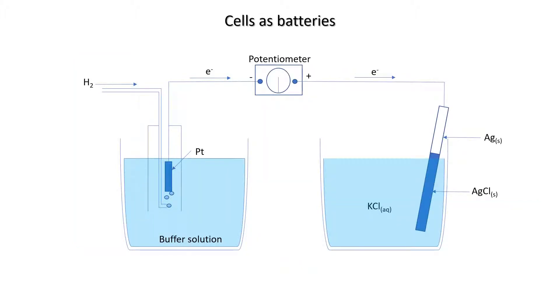Okay, so back to our cell. Now we've put in the potentiometer and the potentiometer completes the circuit. A tiny, tiny current flows and this allows the electrons generated when hydrogen is reduced to flow through to the silver electrode. At the silver-silver chloride interface, these electrons reduce the silver in silver chloride to solid silver metal, releasing a chloride into the KCl aqueous solution.